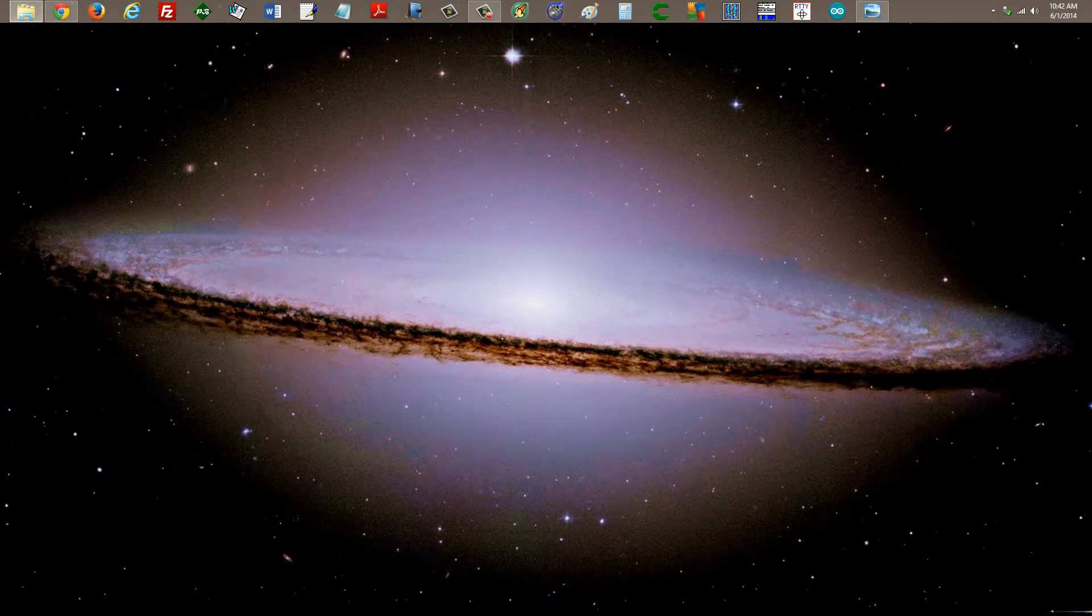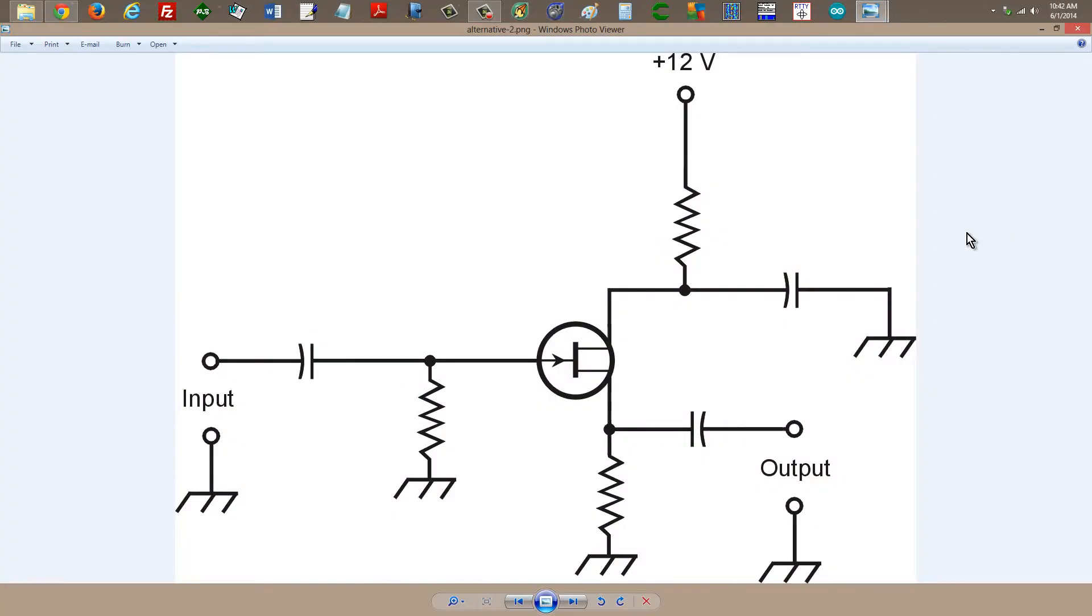But here is the circuit from that book, Chapter 23, using an n-channel junction field effect transistor. This circuit is known as a source follower. This is the source right here. This is the gate. And this is the drain.